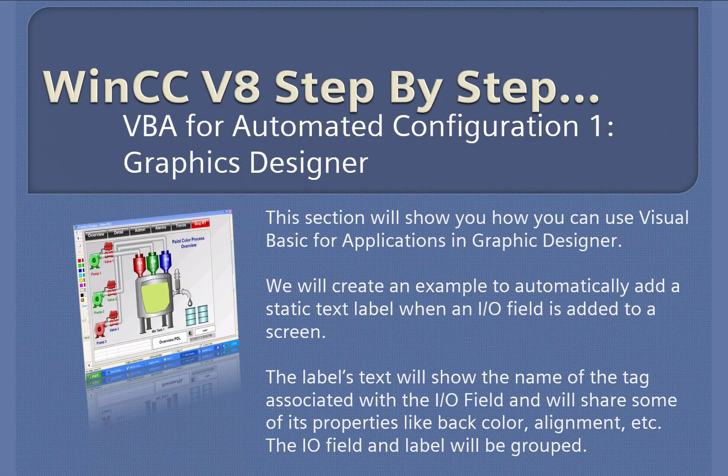WinCC version 8 step-by-step Visual Basic for Applications for automated configuration in the Graphics Designer. In this section I'm going to show you an example of how to use VBA in the Graphics Designer editor. We use VBA for automated configuration. The example we're going to create is: every time an IO field is added to a screen, it'll automatically create a static text label with the text containing the name of the tag associated with that IO field, and it will copy some properties of the IO field into the static text label so that they look the same, and it will group them all together.